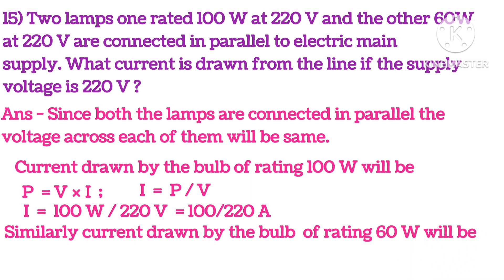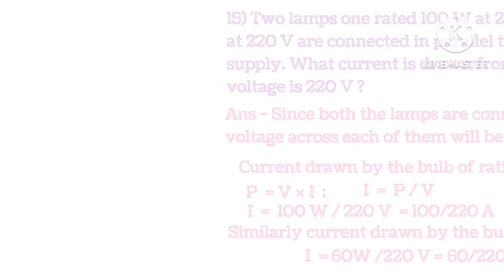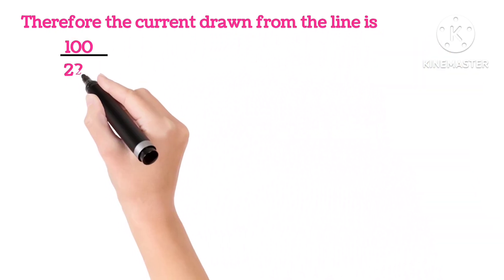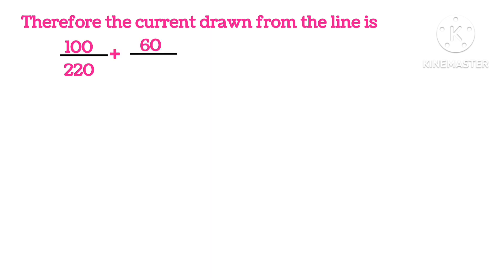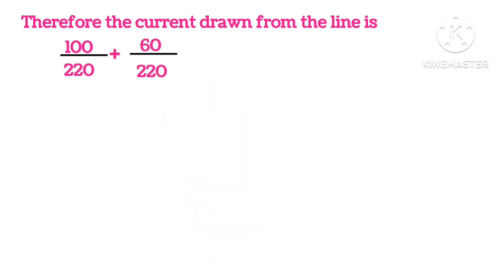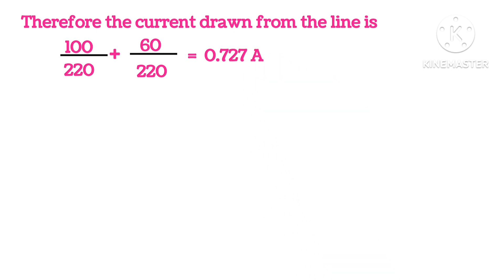Similarly, current drawn by the bulb of rating 60 watt will be I equals 60 by 220 amperes. Therefore, the current drawn from the line is the sum of both the currents, and we get 0.727 amperes.